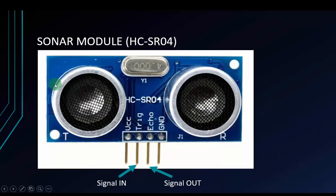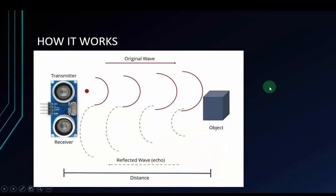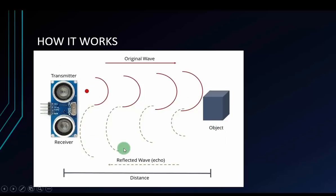On the left is the SONAR transmitter, because it has a 'T' marked here. And on the right is the SONAR receiver, because it has an 'R' marked here. This is how the module works: the SONAR transmitter will send a wave to the object, and then the receiver will receive the reflected echo wave from the object. The distance between the object and the module is what we will find in this video.